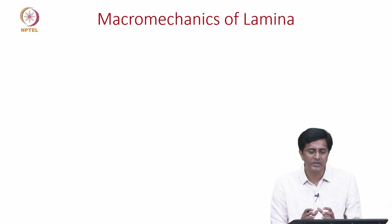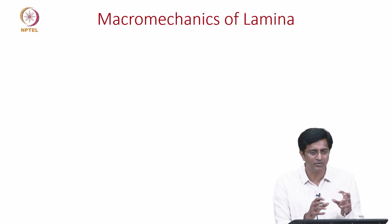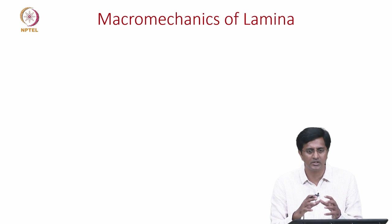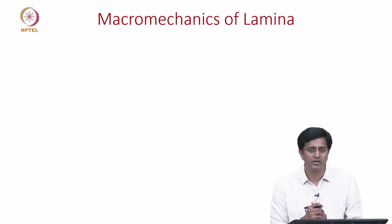We will now start discussing about the macro mechanics of lamina. We assume that the lamina is a homogeneous material, though in reality we know that it is composed of fibers and the matrix and when you consider these two it is a non-homogeneous material. But for our mechanics applications it becomes easy if we assume that the lamina is a homogeneous material and use the effective properties which are coming from the matrix and the fiber.